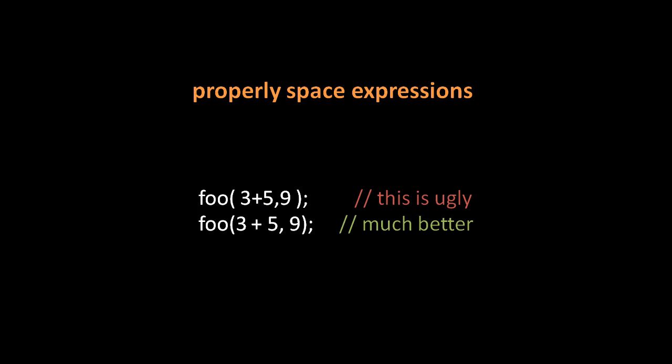When it comes to spacing in expressions, always place spaces on both sides of binary operators like the plus sign. Also, put a space after each comma in a list of parameters or arguments, and never put a space after a symbolic unary operator like the exclamation mark for not, nor should you ever put a space after an opening paren or before a closing paren. Here you can see in the call to foo on the top that the parentheses are padded with spaces — don't do that.